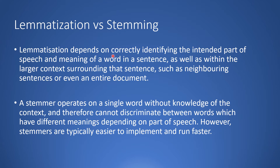In lemmatization, it actually depends on correctly identifying the intended part of speech and meaning of a word in a sentence, as well as the larger context surrounding that sentence such as neighboring sentences or even an entire document. A stemmer, on the other hand, operates on a single word — it doesn't have knowledge of the context and cannot discriminate between words with different meanings depending upon part of speech. But stemmers are typically easier to implement and run faster.